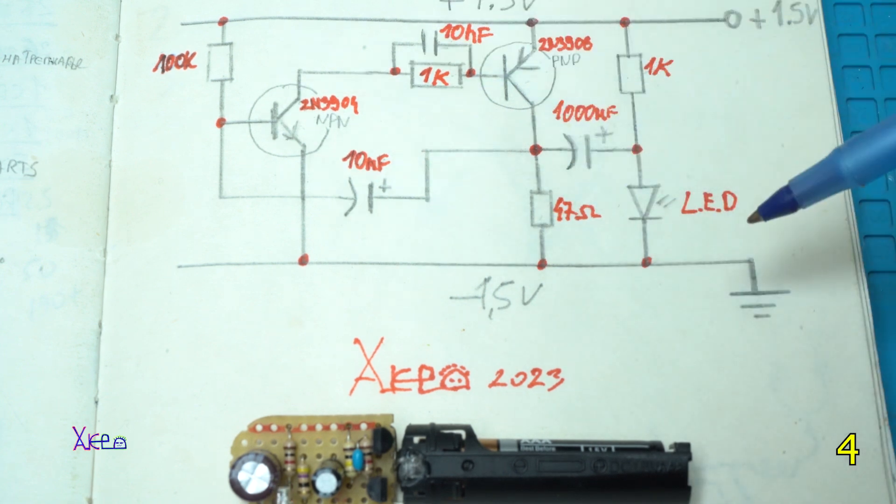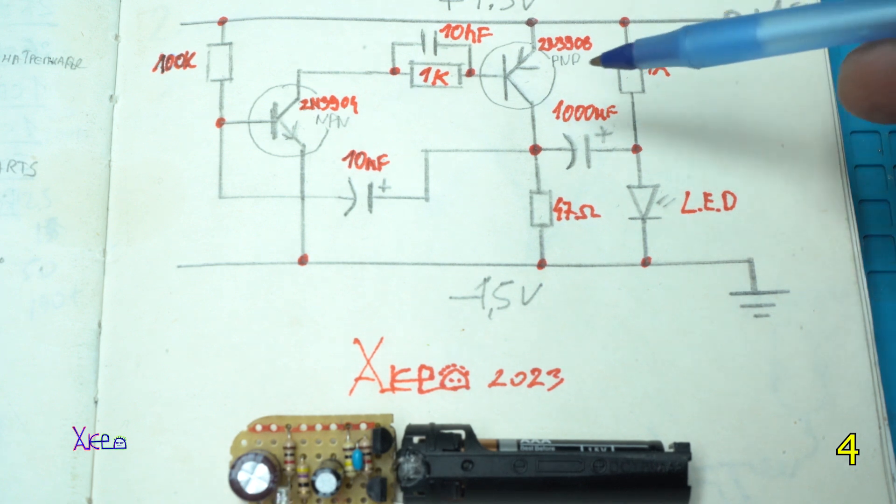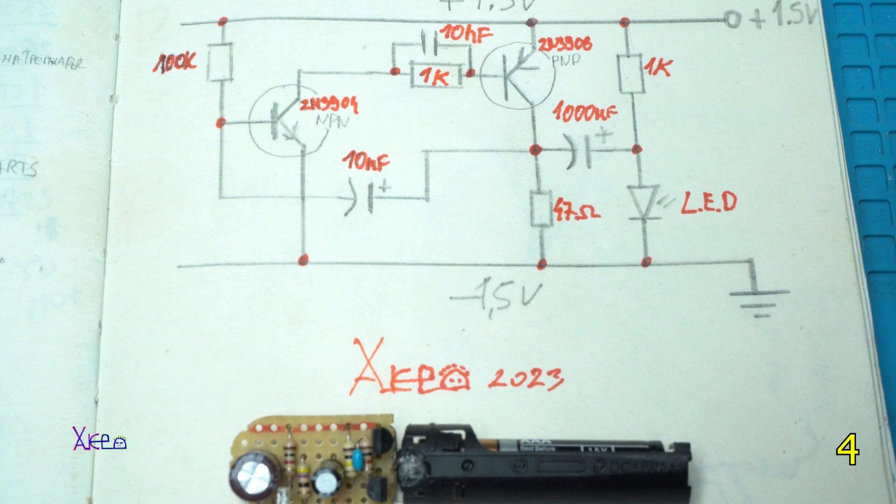Here is the schematic. You can take a screenshot on your phone. It has 10 electronic components.